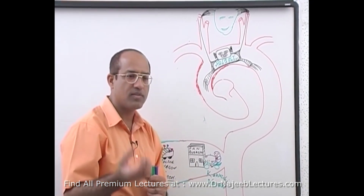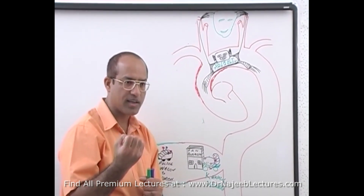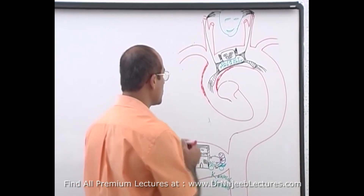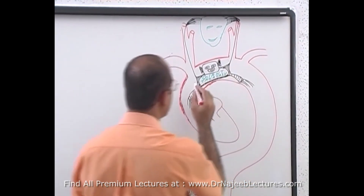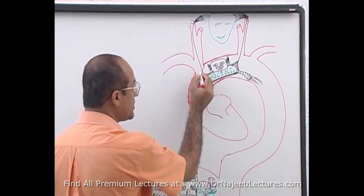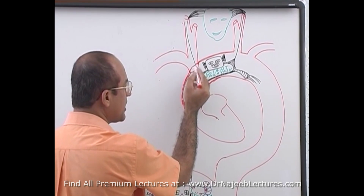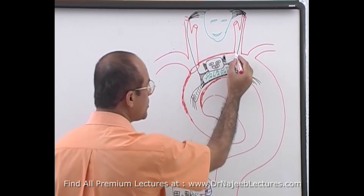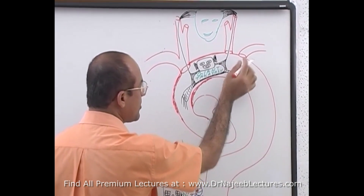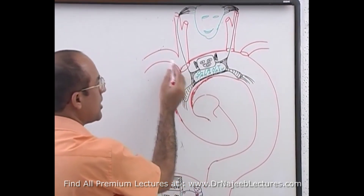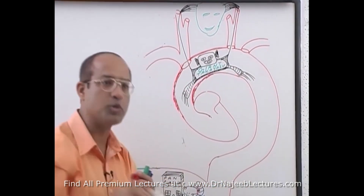The fibrotic vessels shrink and produce stenosis. This is a key feature of Takayasu's vasculitis — it produces stenosis. When the origins of these vessels undergo stenosis, blood supply to the upper limbs and to the head and neck is significantly reduced.